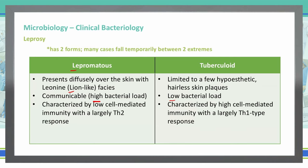Lepromatous is characterized by low cell-mediated immunity with a large Th2 cell response, whereas tuberculoid is a high cell-mediated immunity, mostly of the Th1 type response.